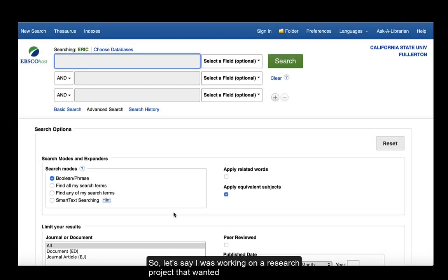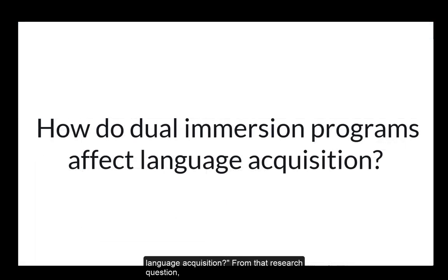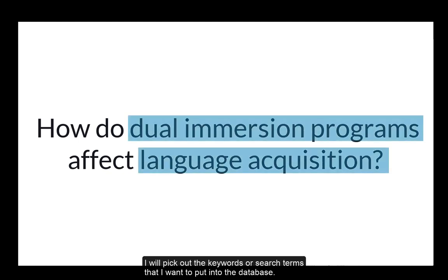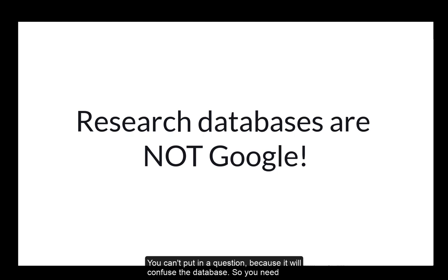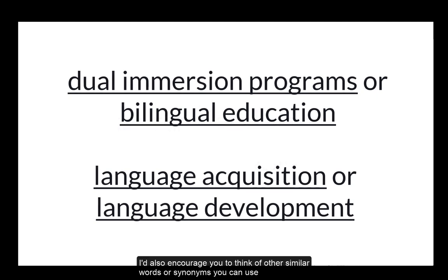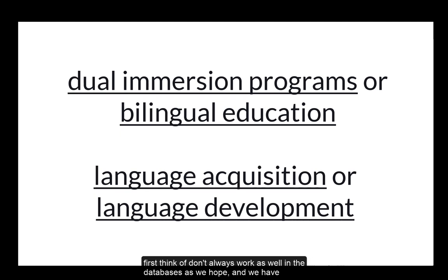So let's say I was working on a research project that wanted to answer the question: how do dual immersion programs affect language acquisition? From that research question, I will pick out the keywords or search terms that I want to put into the database. Research databases are not like Google — you can't put in a question because it will confuse the database, so you need to pick out the keywords. I'd also encourage you to think of other similar words or synonyms, because sometimes the keywords we first think of don't always work as well in the databases, and we have to retool the search a bit.